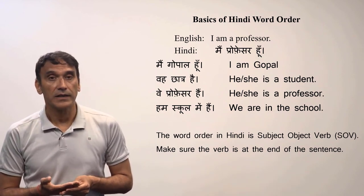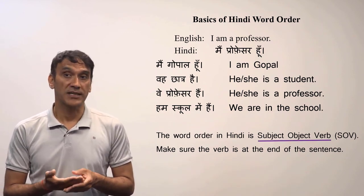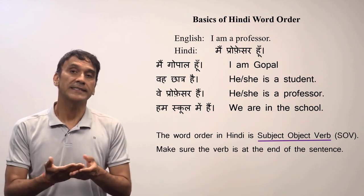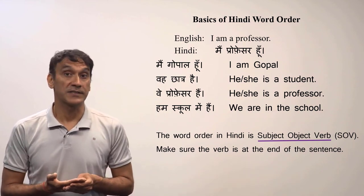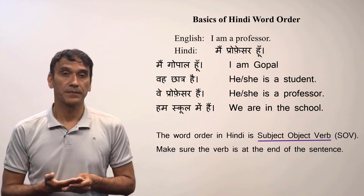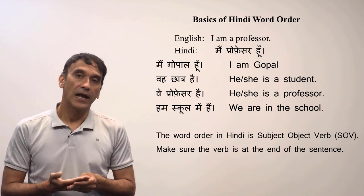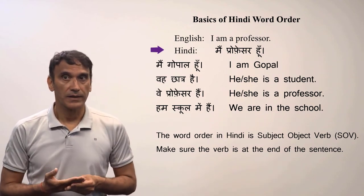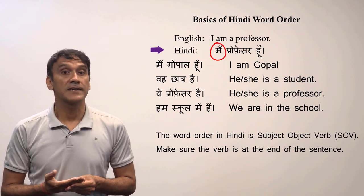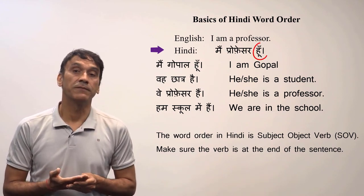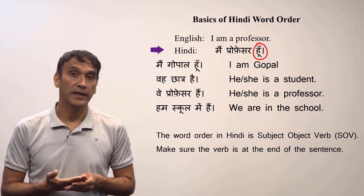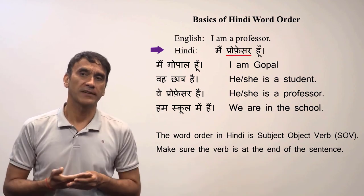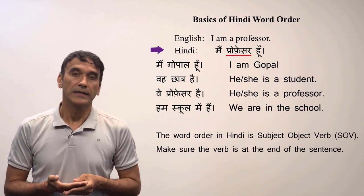Now let's learn the basics of Hindi word order. The word order in Hindi is Subject-Object-Verb, meaning the Hindi sentence starts with the subject and ends with the verb. For example: 'I am a professor' in Hindi is MAIN professor HU. The sentence starts with the subject MAIN and ends with the verb HU.